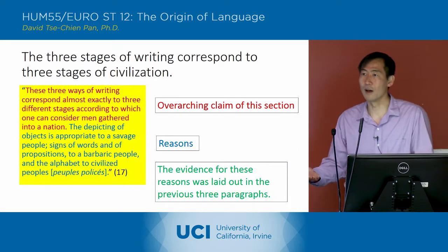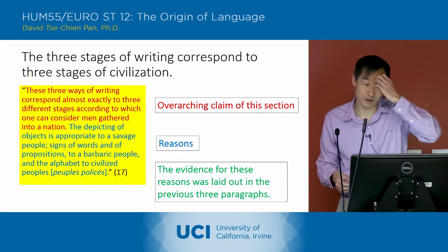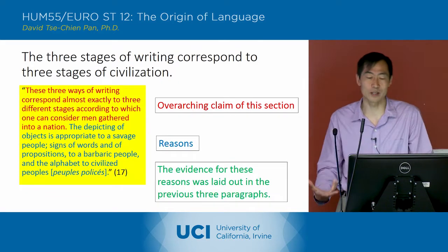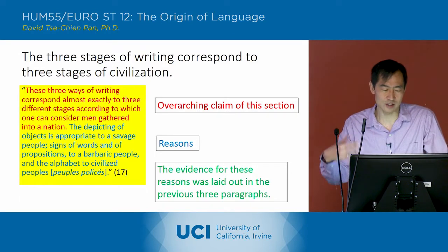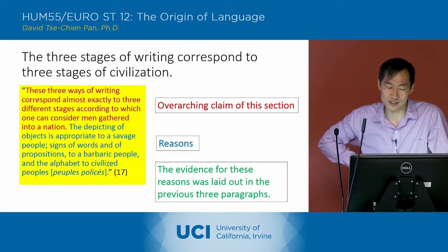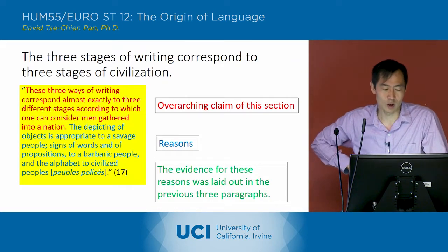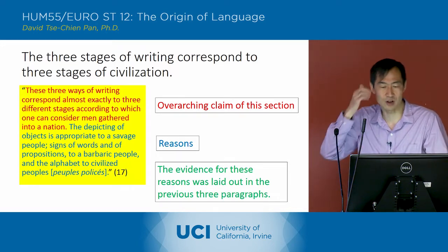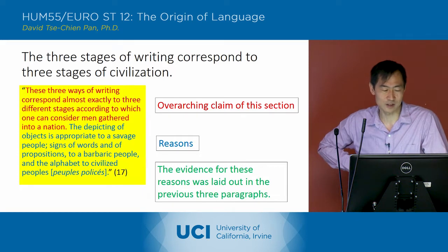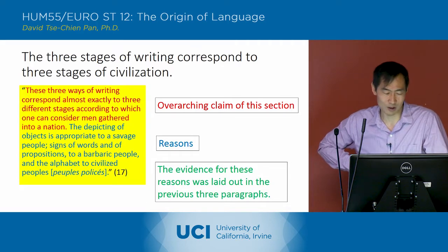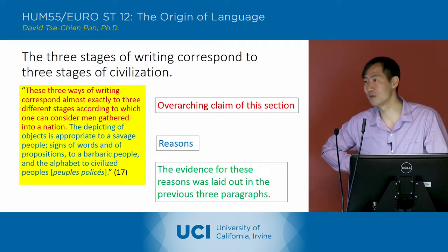Overall, he has these three paragraphs on the three stages of language, and then a final paragraph that brings it all together with an overarching claim: 'These three ways of writing correspond almost exactly to three different stages according to which one can consider men gathered into a nation.' So these are three stages of writing corresponding to three stages of civilization. He says the depicting of objects is appropriate to a savage people, signs of words and propositions to a barbaric people, and the alphabet to civilized peoples.